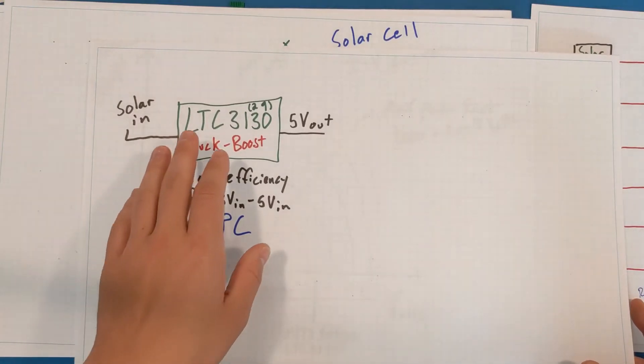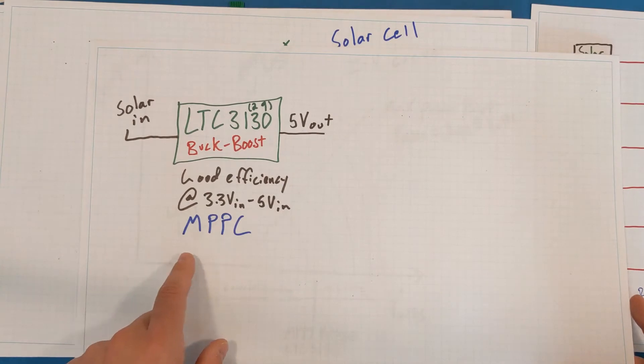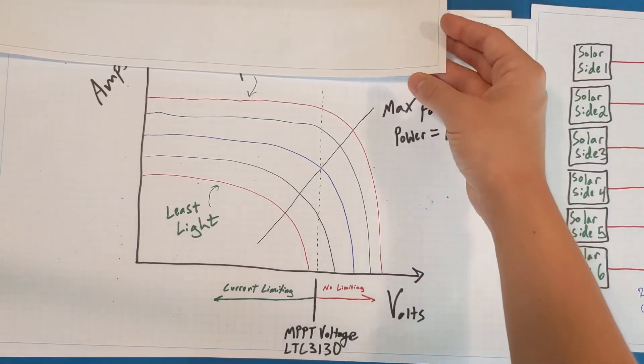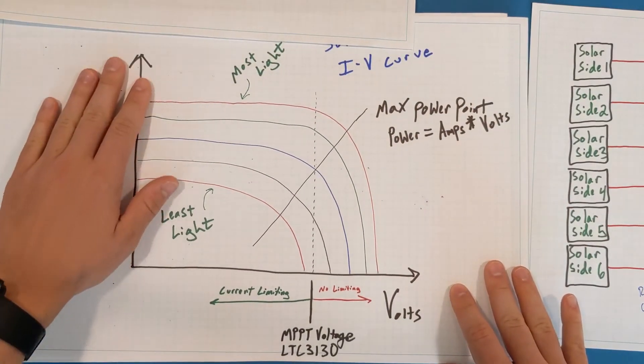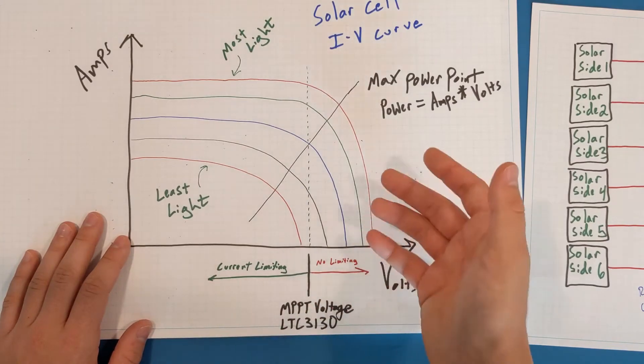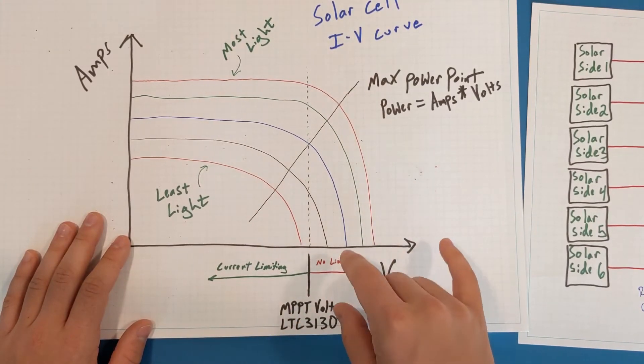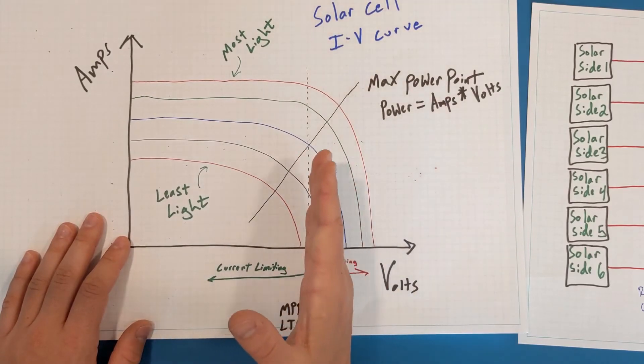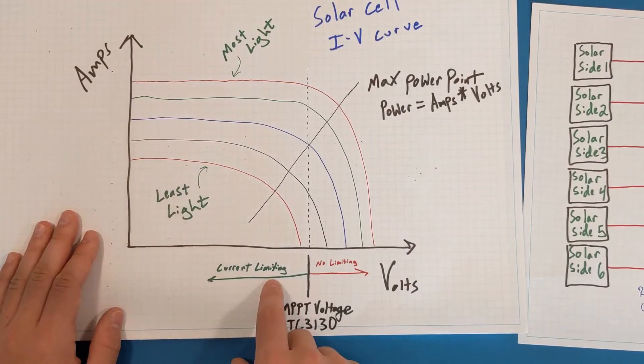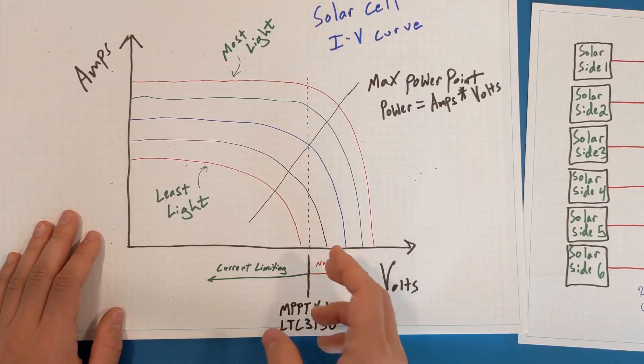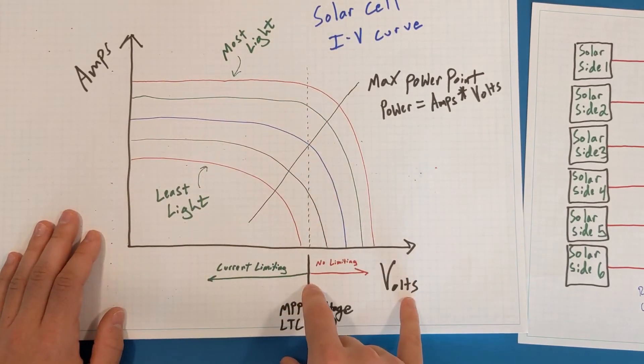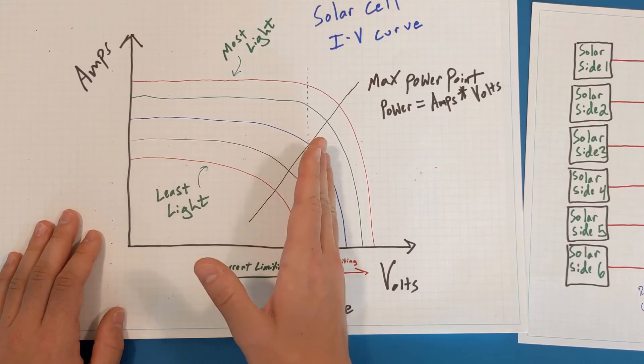As I said before, the LTC3130 or the 3129 has maximum power point control or maximum power point tracking capability. And it does that, if we look at the IV curve again, using a set voltage. So you can set a voltage on a pin of the 3130, and essentially, if the input voltage drops below that set voltage, the chip will automatically current limit the input to increase the voltage back up to a point where it approaches the maximum power point.